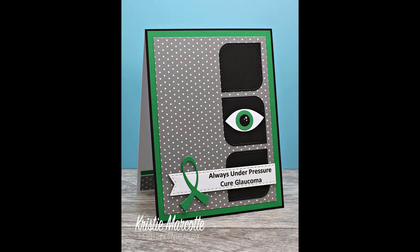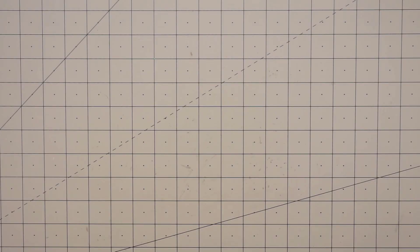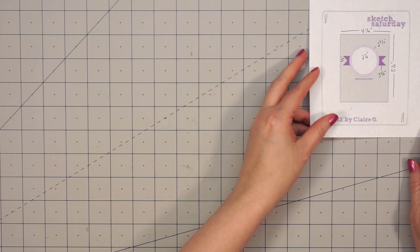It's called the sneak thief of sight because there are generally no symptoms and once the vision is lost, it's gone for good. There is currently no cure, but vision loss can be slowed or prevented with early detection.